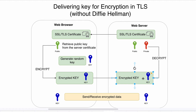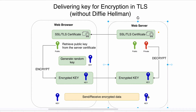When the web server decrypts this key, both sides — the web browser and the web server — will possess the same key that can be used for further data encryption. That's how the key for encryption is delivered without the Diffie-Hellman algorithm.